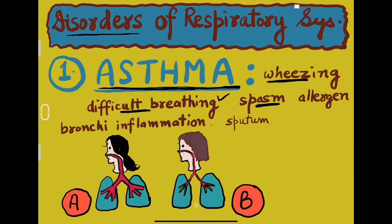Mostly, asthma can be caused by allergens such as pollen grains and dust. Inflammation of the bronchi and bronchioles — their swelling — causes narrowing of the passages. The passage narrows down, making breathing difficult.